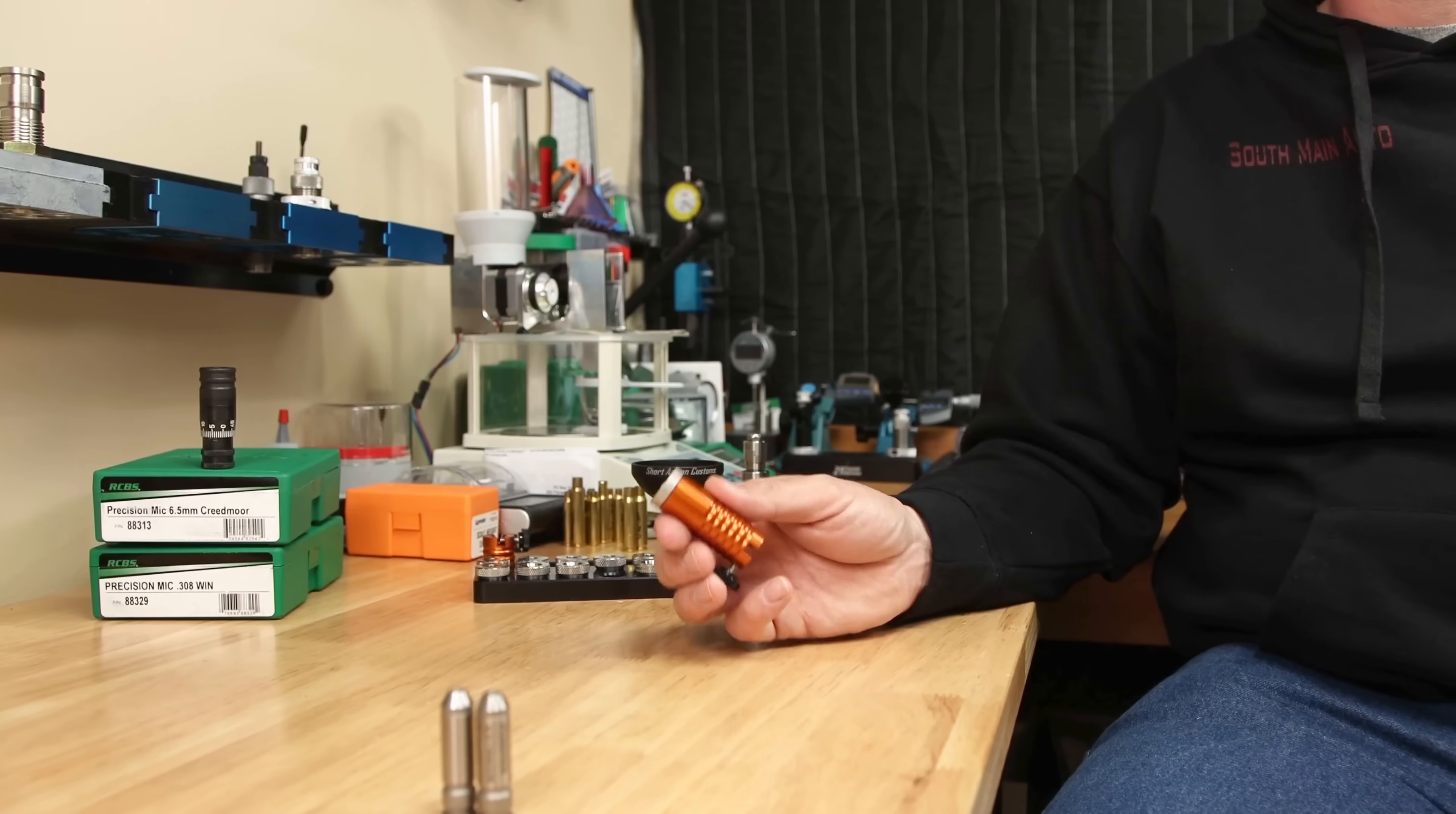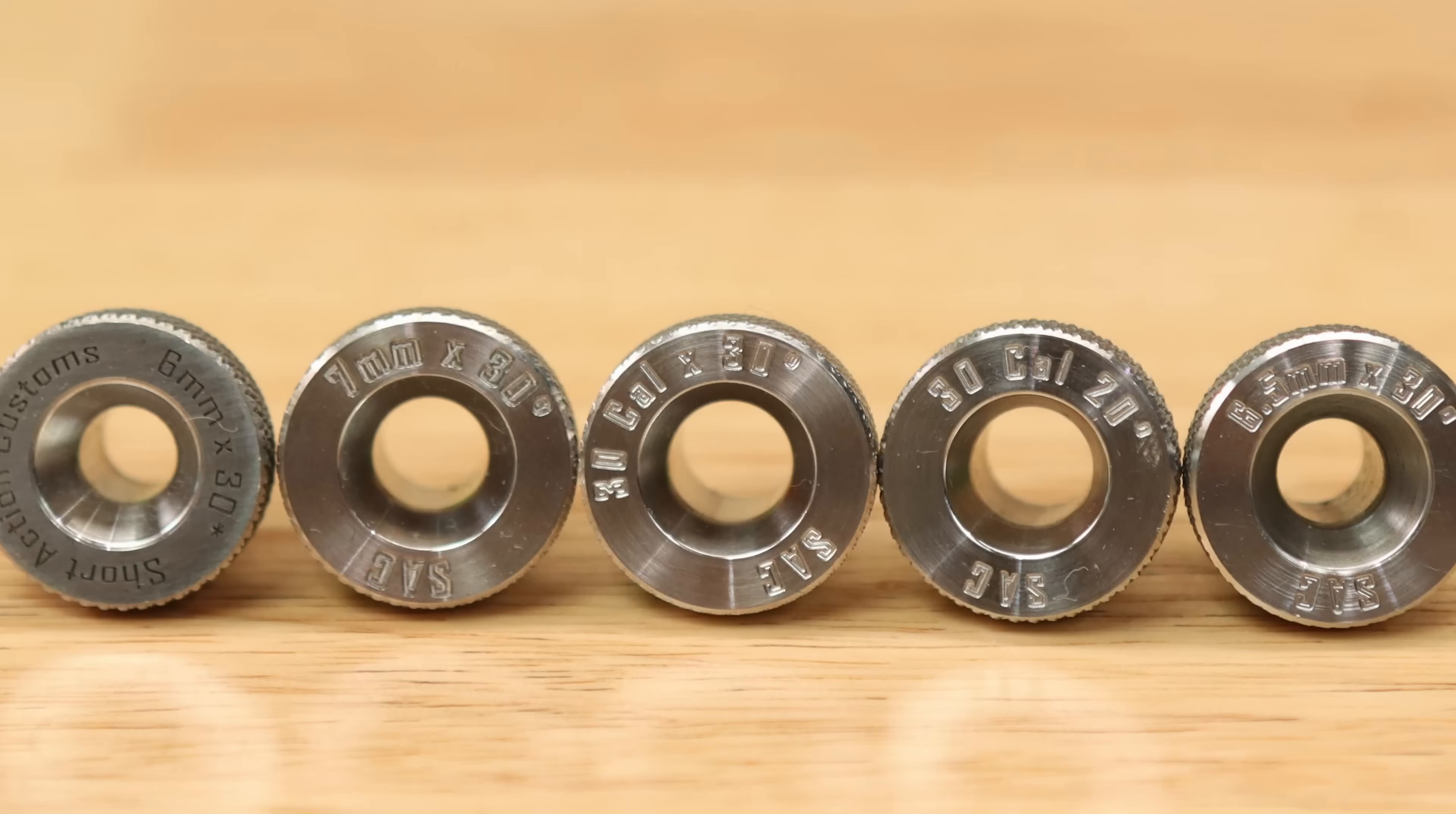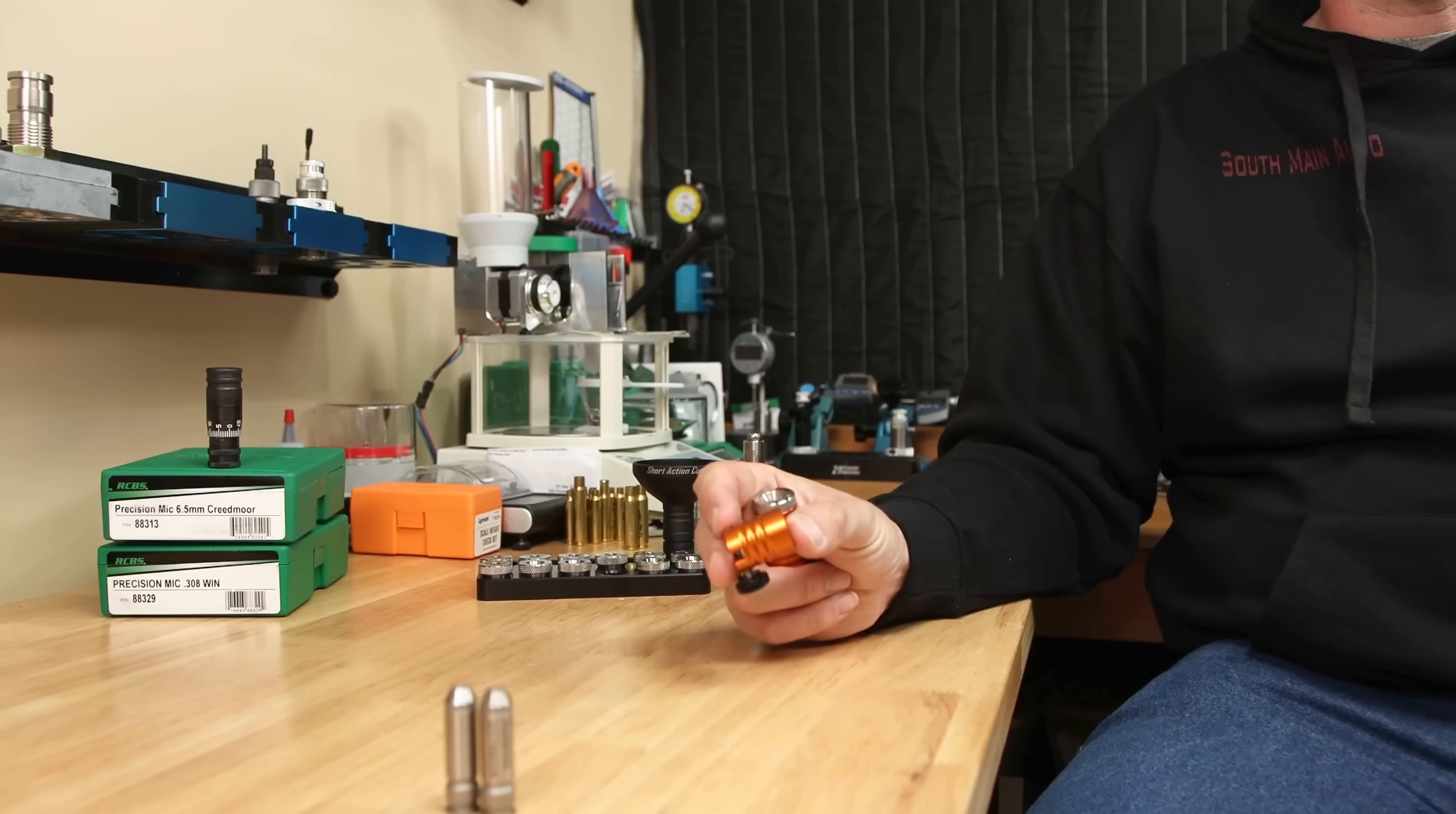My highest end recommendation is the option from Short Action Customs. These comparators are probably the most expensive to get started, but the caliber inserts aren't really too expensive at around $30. They're made from stainless steel and basically have the exact shoulder angle of the caliber that they're designed for. It's machined into the insert. This makes them extremely easy to use and get repeatable information.